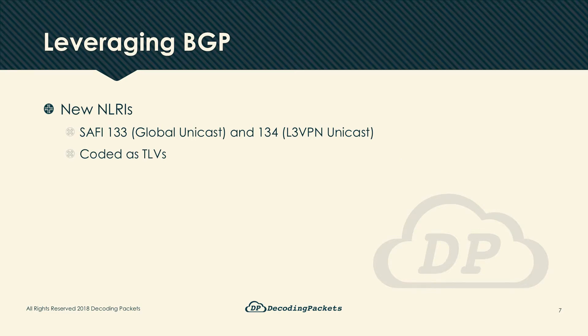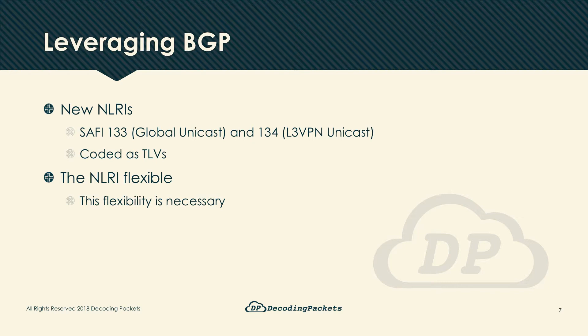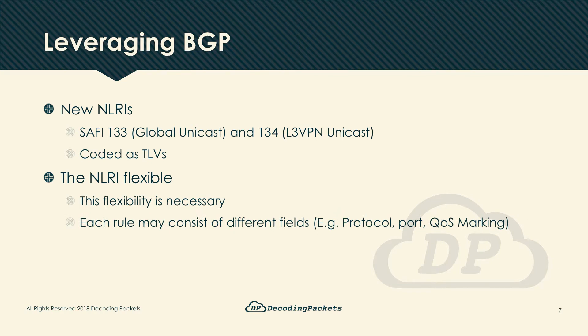All BGP NLRIs, even a simple IPv4 route, are encoded as TLVs — type-length-values — and this one is no different. Where the difference lies is in the flexible structure of this NLRI. For flow spec, this flexibility is almost mandatory. Just like ACL entries don't always include all possible fields — some specify TCP/UDP/ICMP, some don't; some inspect QoS markings, most don't — flow spec must also provide similar flexibility when writing rules.